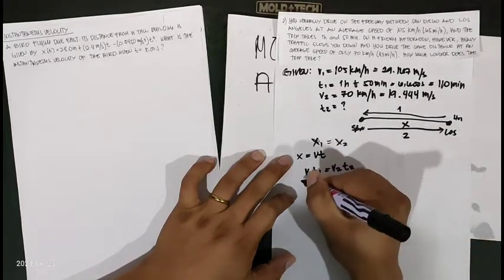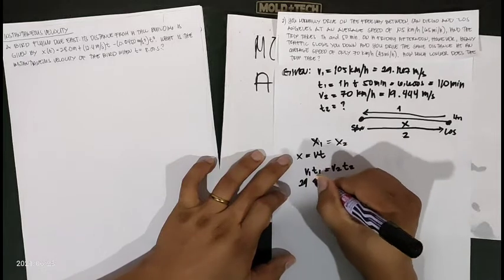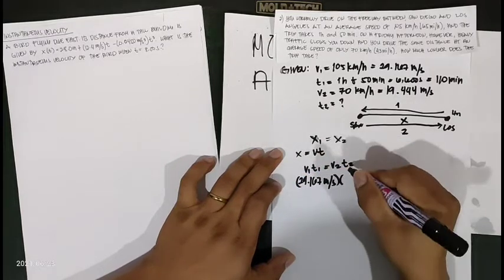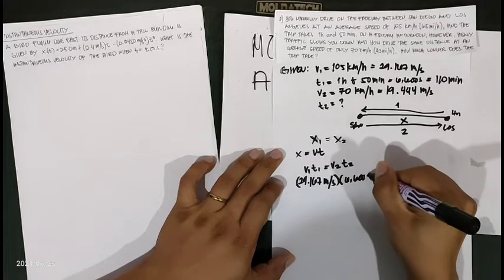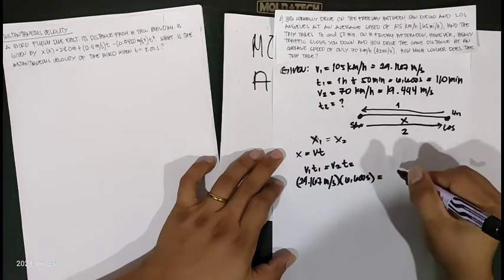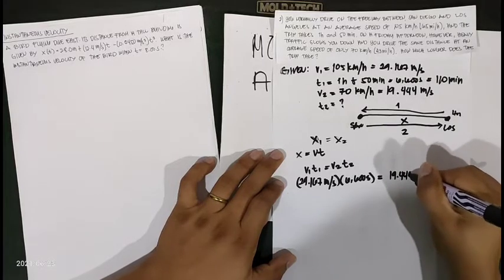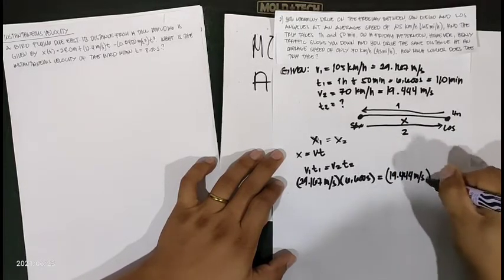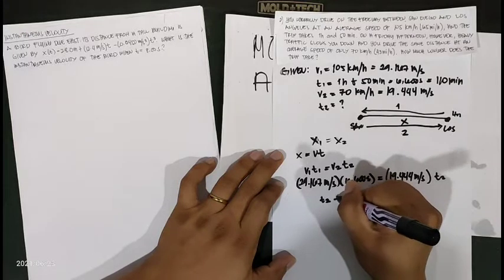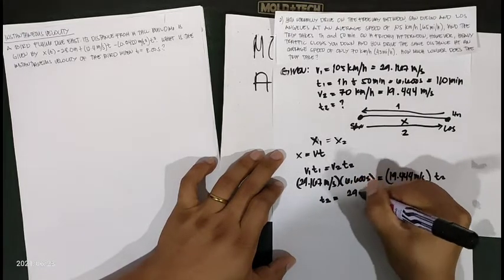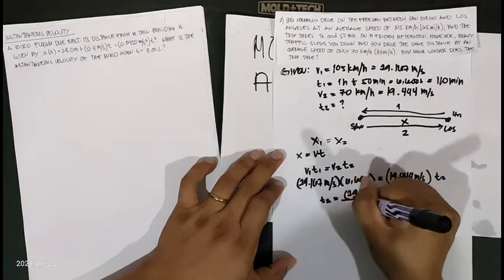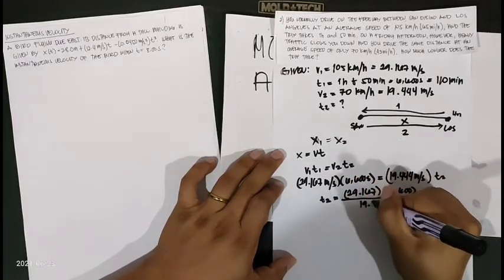So, V1 is 29.167 meters per second multiplied by time T1, which is 6,600 seconds. For the second term, V2 is 19.444 meters per second multiplied by T2. Solving for T2: T2 equals 29.167 multiplied by 6,600, divided by 19.444.